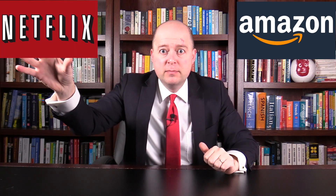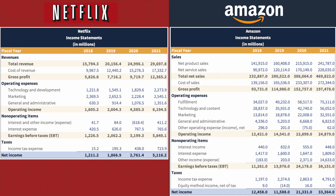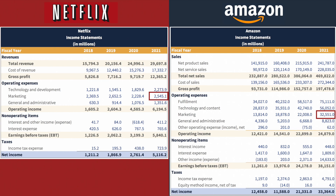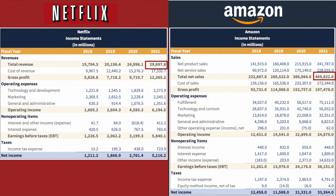For example, let's compare Amazon's marketing costs to those of Netflix. Amazon spent a lot more than Netflix on marketing in 2021 — $32.5 billion for Amazon compared to just $2.5 billion for Netflix.